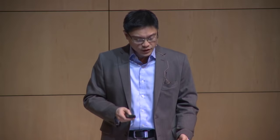There are some studies that almost contradict what we're talking about. The most obvious is the Chinese rice eater. This is the InterMAP study — a very detailed study of dietary habits in the US, UK, Japan, and China. In China, whether you're looking at grams per day or percent calories, they're eating a lot of carbohydrates — about 360 grams a day — and it's all white rice. Not brown rice. Back in the early to mid-90s, they didn't have much obesity, but they were eating a ton of white rice.